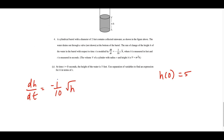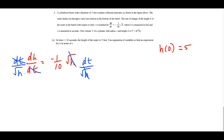To separate variables, we want all h terms on one side and t terms on the other. We multiply both sides by dt and divide both sides by √h. The dt's cancel and the √h's cancel, leaving dh over √h — written as h to the negative 1/2 power — equals negative 1 over 10 times dt.